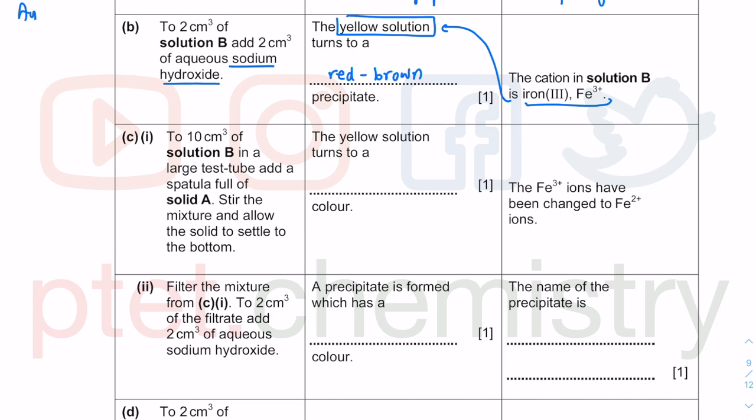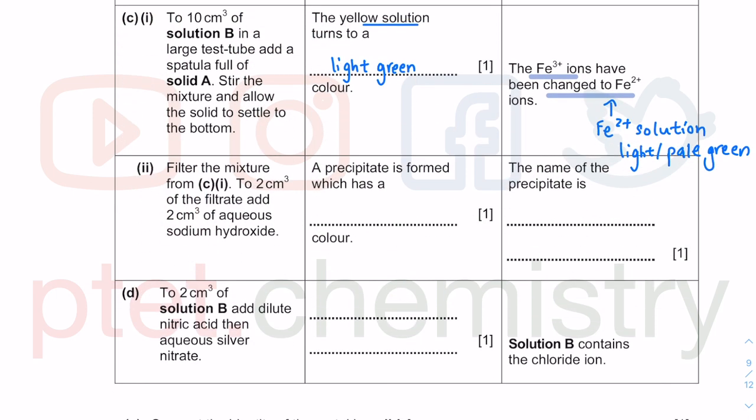In this next question, the conclusion tells us iron 3 changed to become iron 2. The yellow solution will now change to become iron 2 plus solution. Iron 2 plus solution is very light or very pale green, as I demonstrated in the practical tutorial video. When you filter the mixture, the filtrate will contain Fe2+ in a pale green solution.